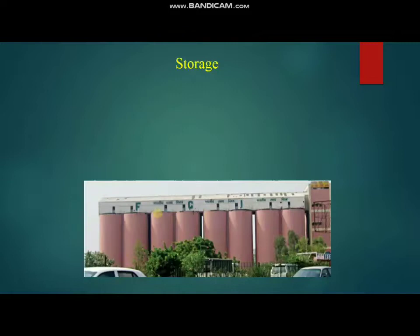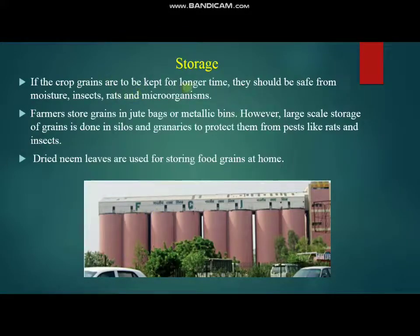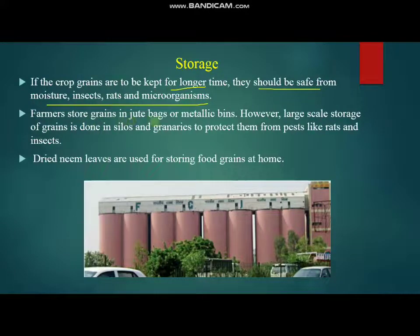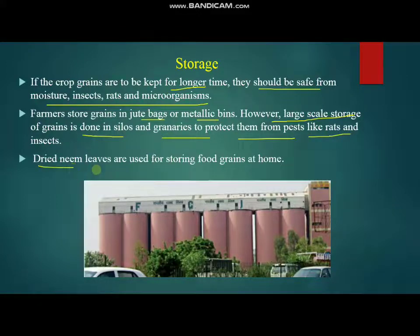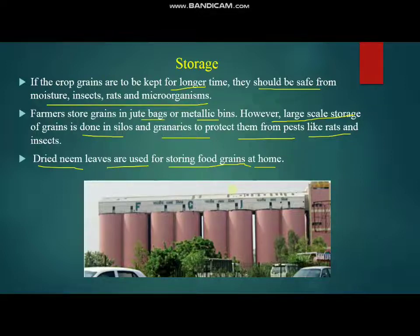For storage, if crop grains are to be kept for a long time, they should be safe from moisture, insects, rats, and microorganisms. Farmers can store grain in jute bags or metallic bins. Large-scale storage of grain is done in silos and granaries to protect them from pests like rats and insects, such as those operated by the Food Corporation of India. Dried neem leaves are used for storing food grain at home.